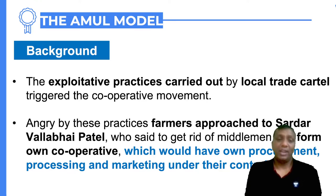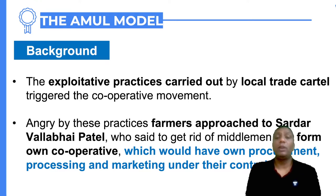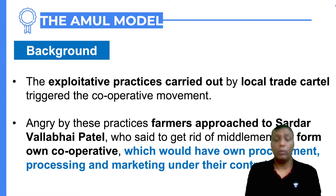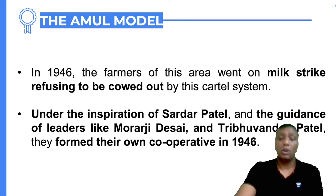Sardar Vallabhbhai Patel suggested forming cooperatives — cooperatives that would handle their own procurement, processing, and marketing, getting rid of the middleman entirely. The whole process would be managed by the cooperative so that the middlemen could no longer exploit the common farmers. Patel suggested the cooperative try to manage the entire milk procurement process.